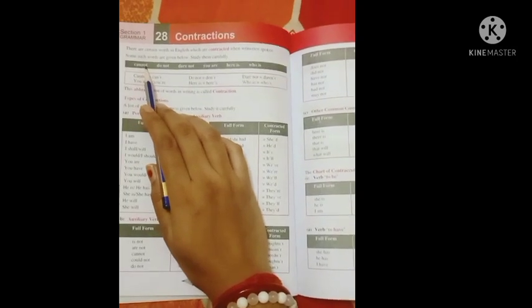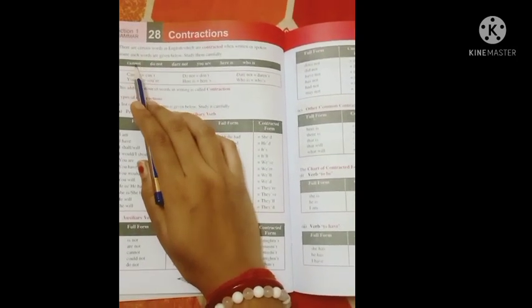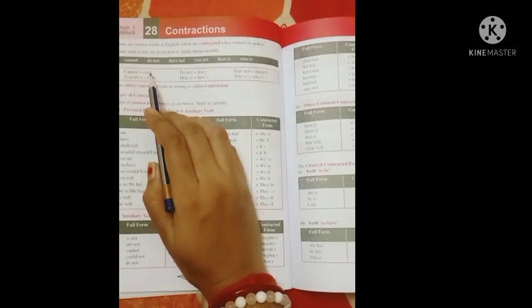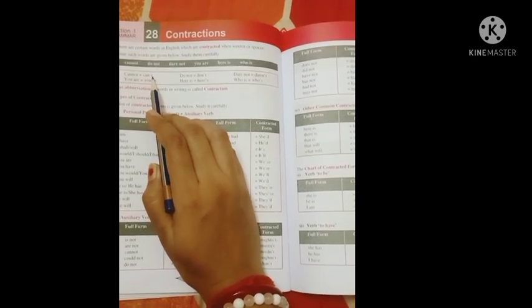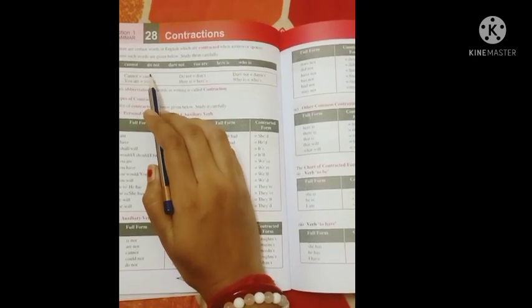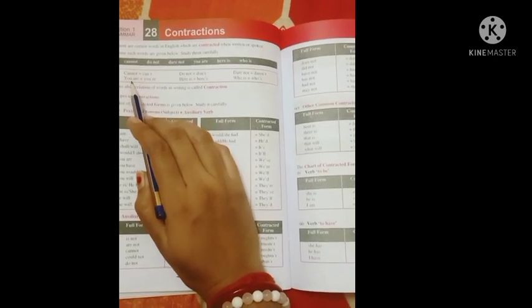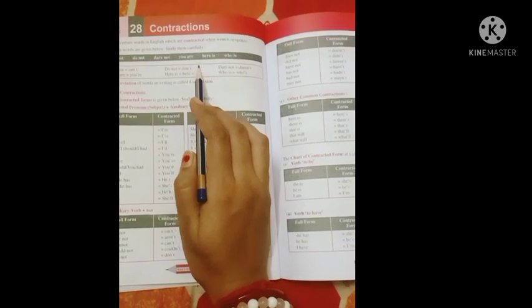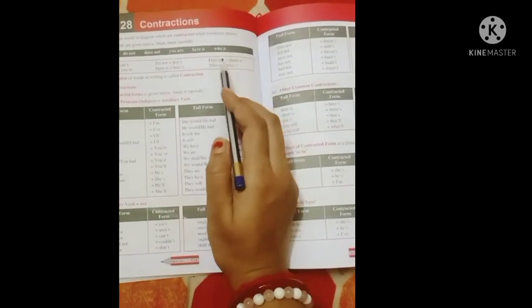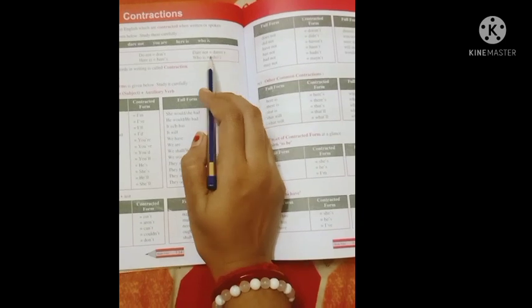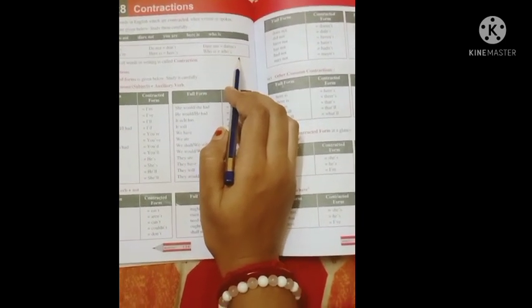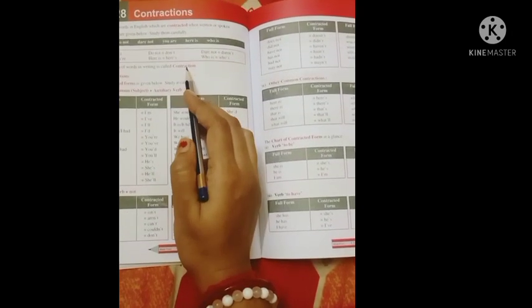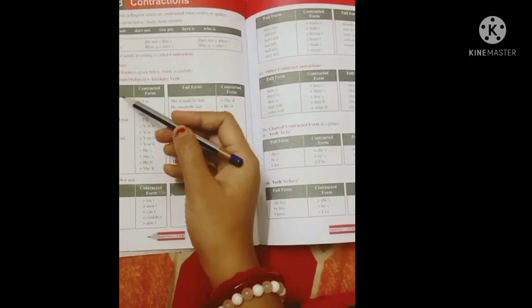Okay, this is the full form and can't is the short form which is contracted. You are, you're. Do not, don't. Here is, here's. Dare not, daren't. Who is, who's. Okay, these are called contractions. There are...